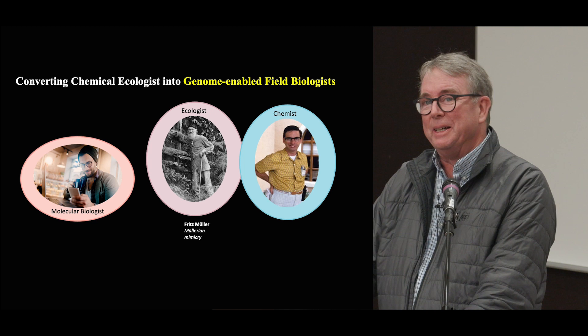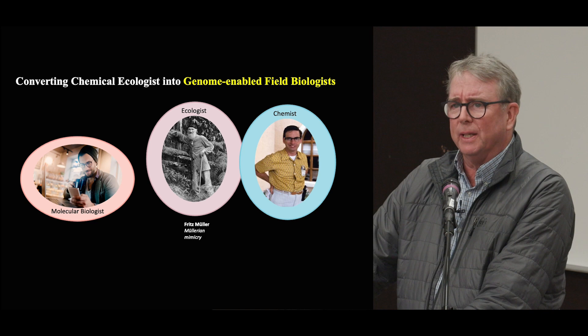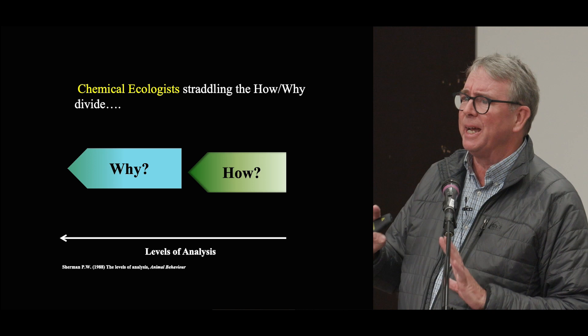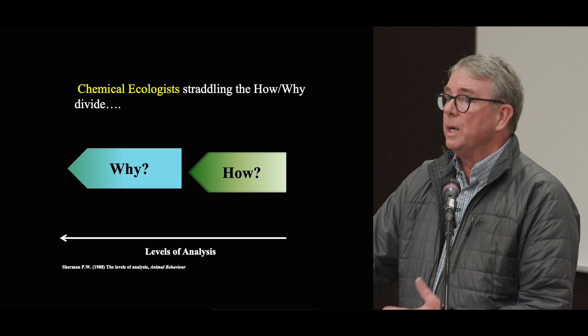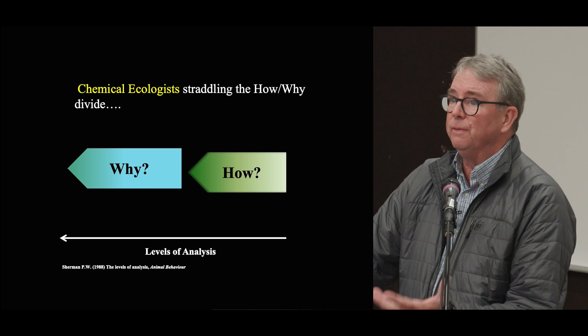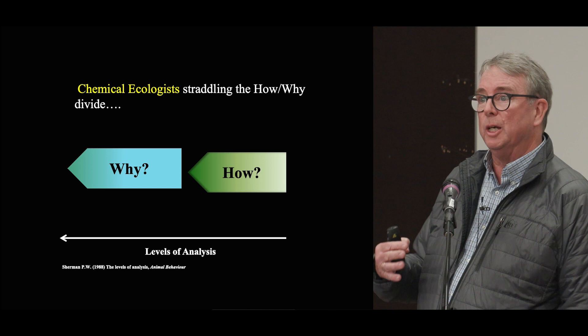I want to talk about the type of science we do, because science can ask questions at many different levels of analysis. In very general terms, there are the how questions and the why questions. Ninety-nine percent of all scientists ask how questions — how do things work, what are the mechanisms? But a certain fraction ask why questions: what are the evolutionary consequences of a particular trait, how does the trait influence an organism's Darwinian fitness? Just about every gene that isn't pseudogenized in a genome has some influence on an organism's Darwinian fitness, helping produce successful grandchildren.